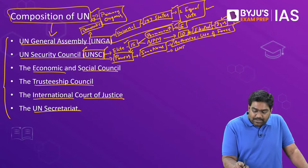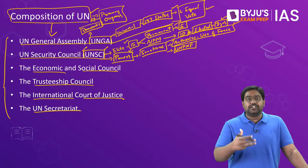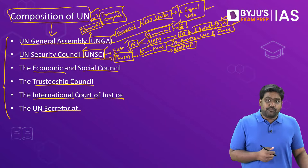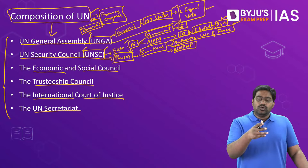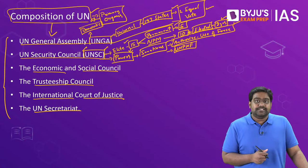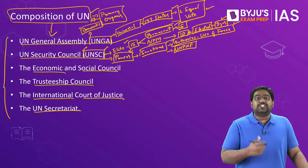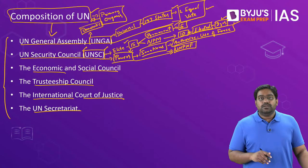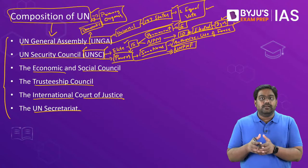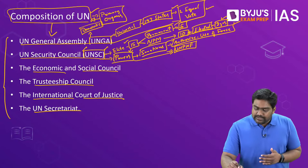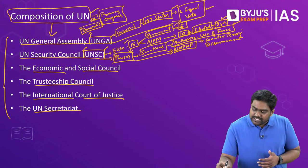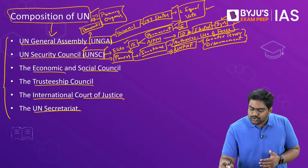UN peacekeeping forces are deployed in conflict zones, especially in countries where there is a civil war going on. Their mandate is to maintain peace and stabilize the situation between two fighting parties. All decisions related to peacekeeping forces — their deployment and their mandate — are determined by the UNSC. All the key issues of security, counter-terrorism, and nuclear disarmament are largely under the control of the UNSC.